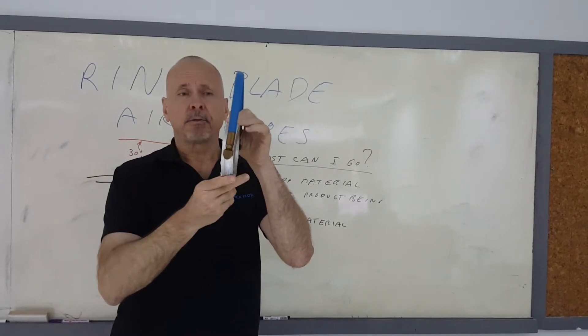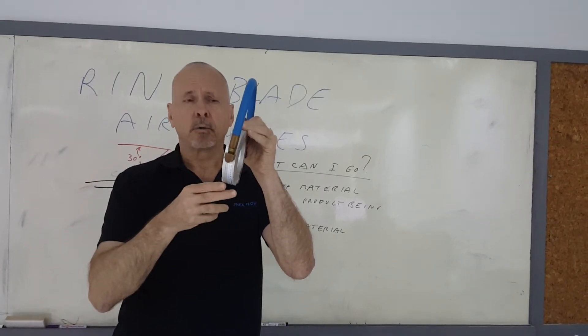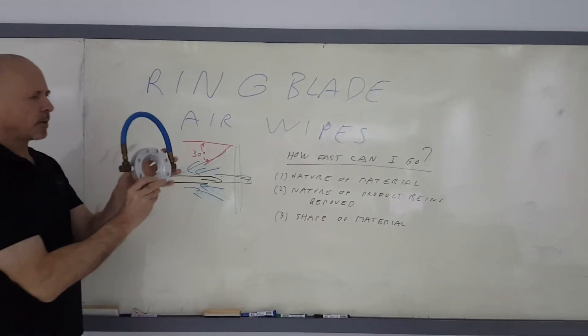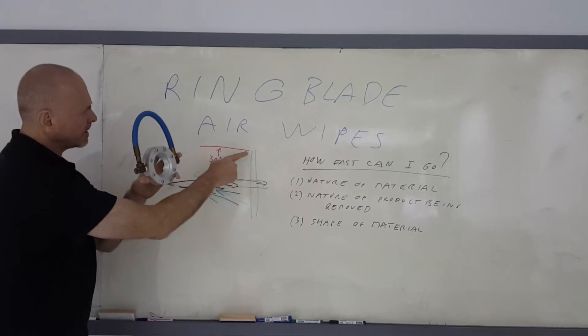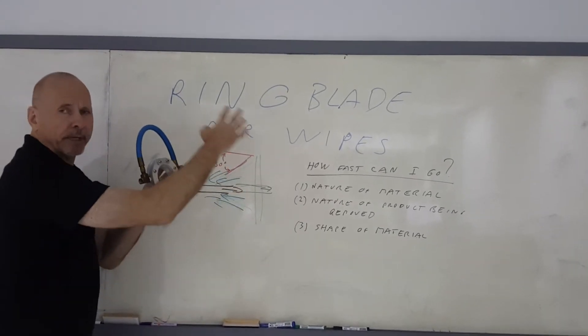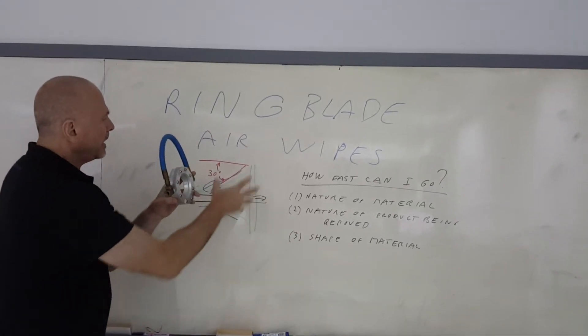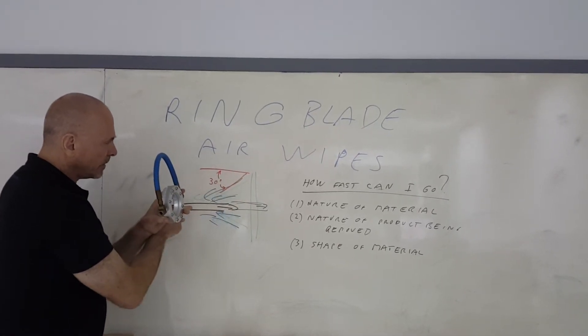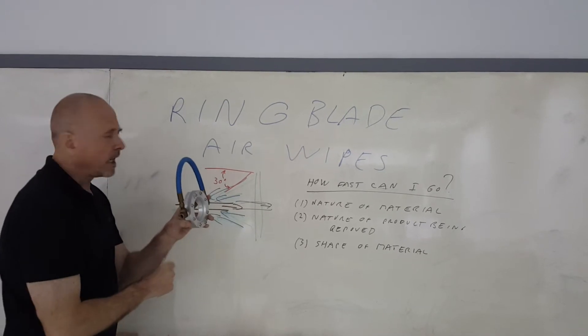The air wipes are designed to basically clean, dry, or cool extruded parts. The way it works is compressed air comes out of a small gap at a 30 degree angle, entrains air from the surrounding environment, amplifying air flow, and blowing with a shearing force on the extruded part that's going through the air wipe.